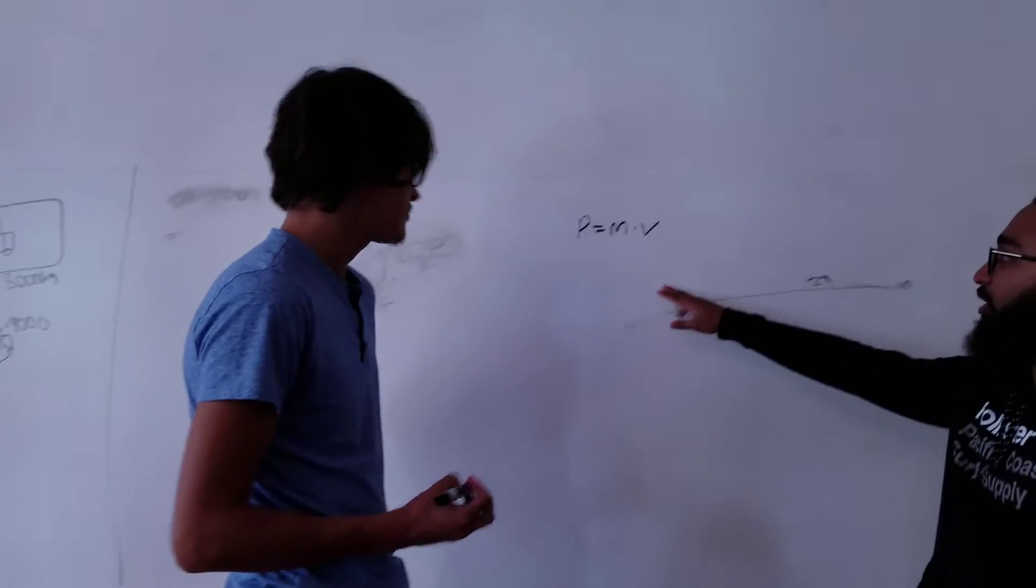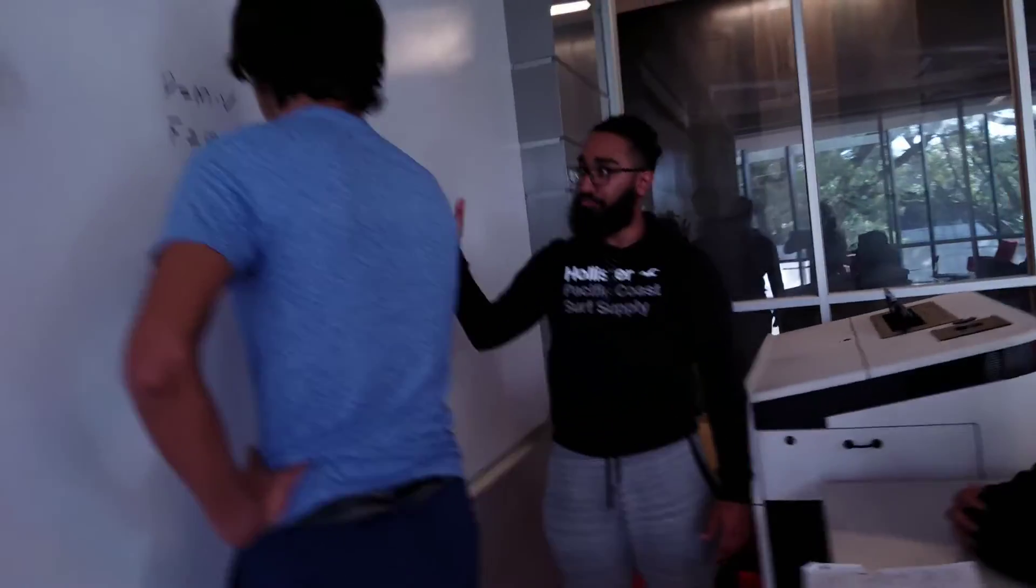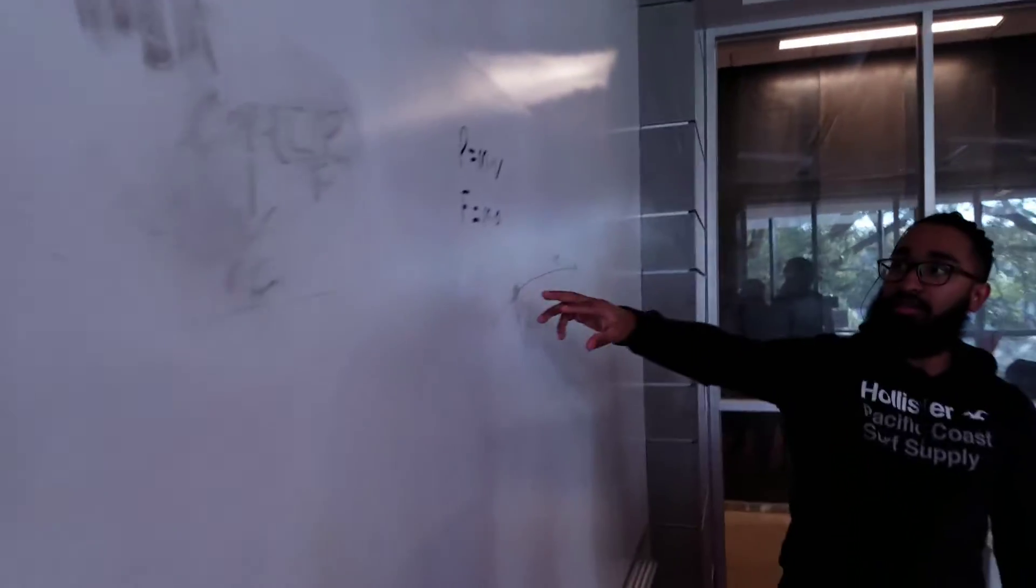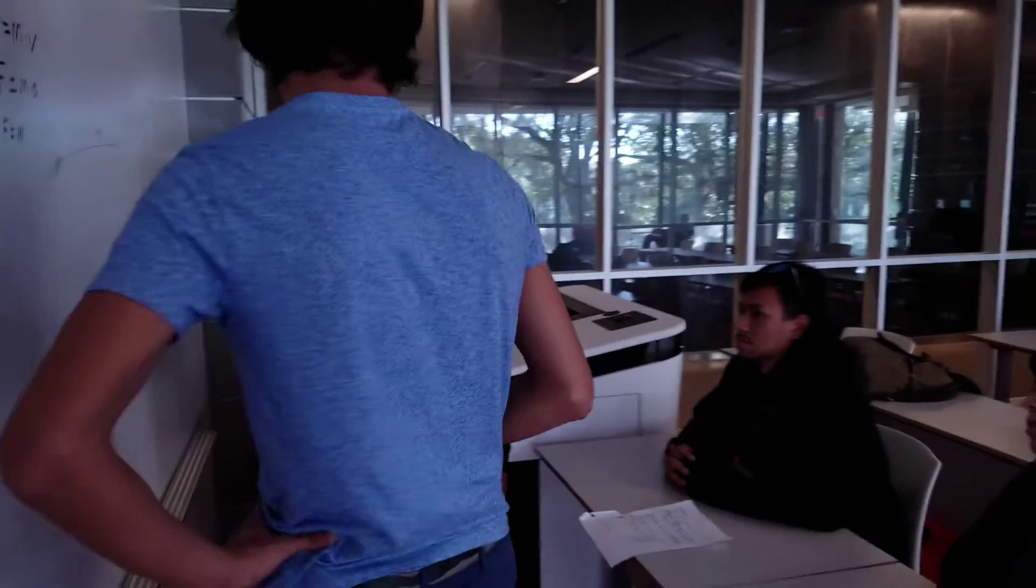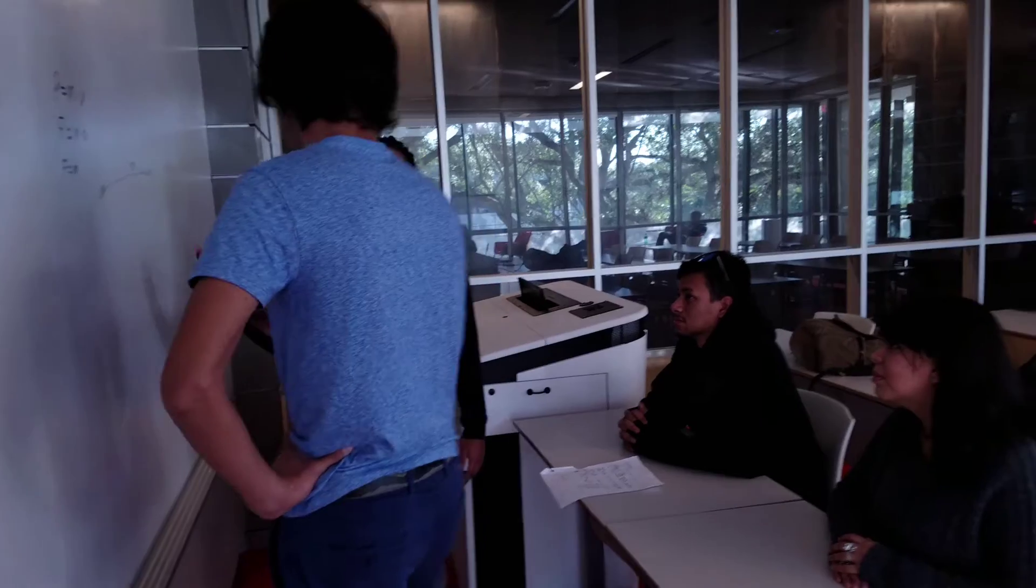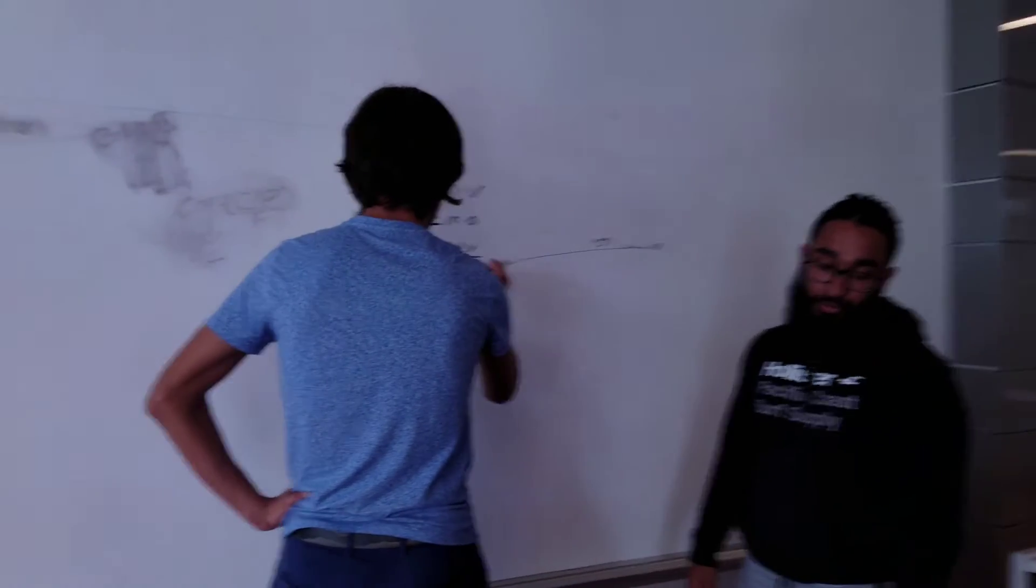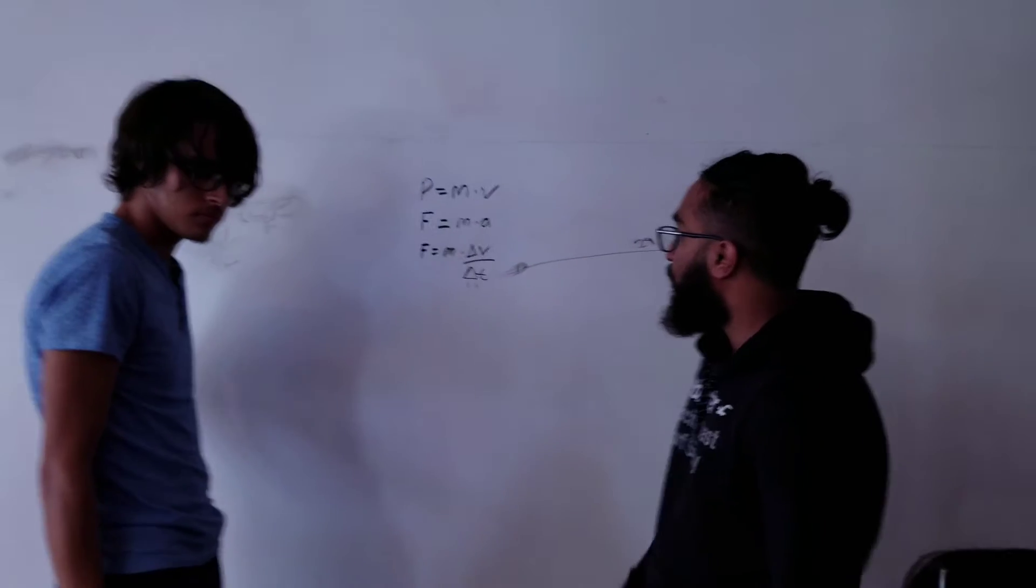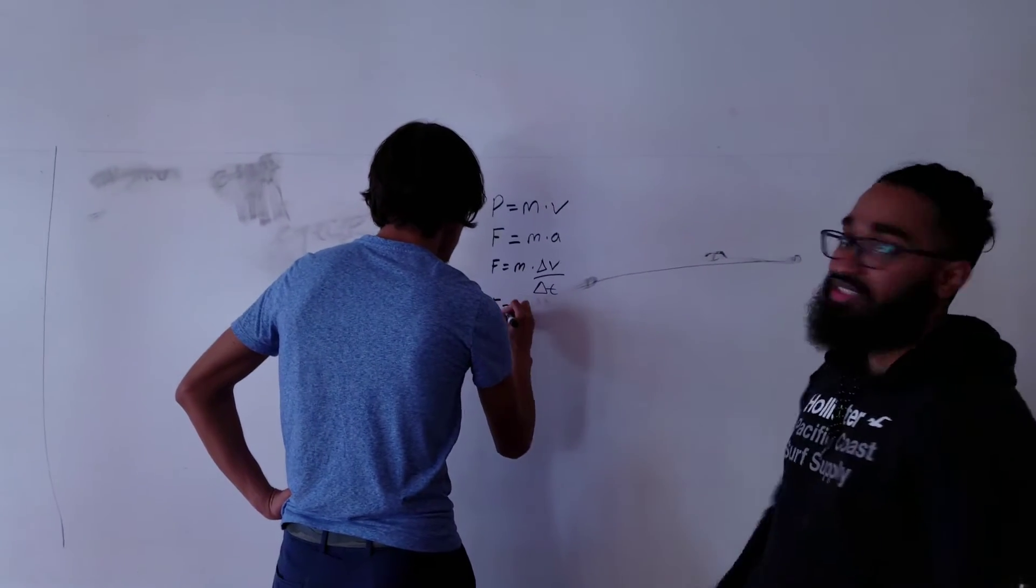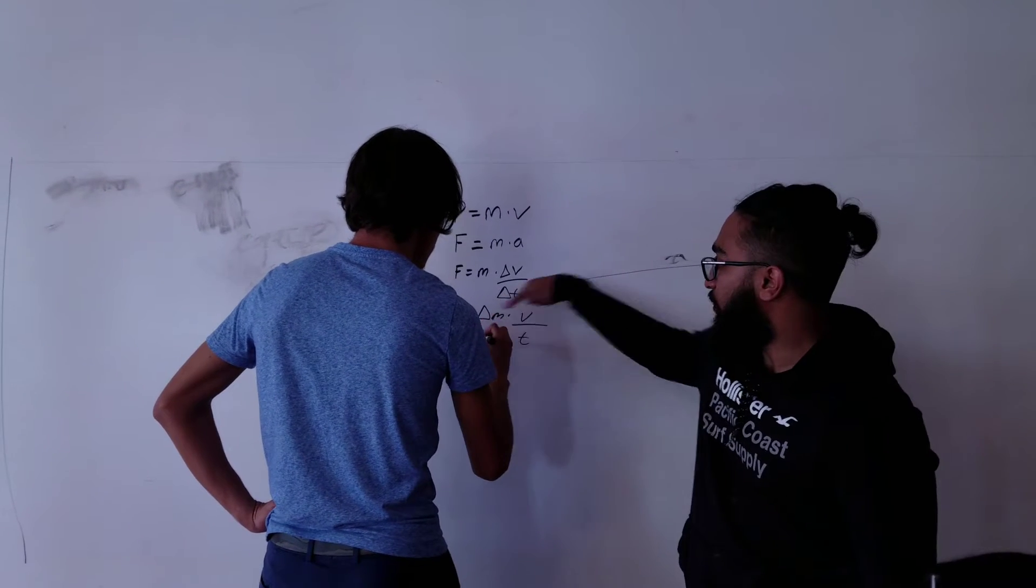Let's relate it to something we know. Force equals mass times acceleration. Now we can rewrite this as force equals mass times the change in velocity over the change in time, delta V over delta T. And then to rewrite this again, putting these together, we can put force equals the change in mass times velocity over time.